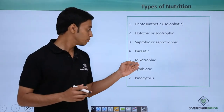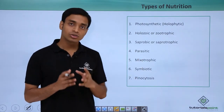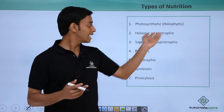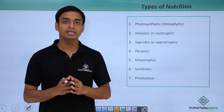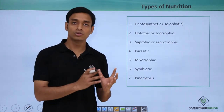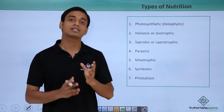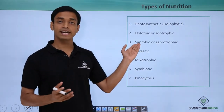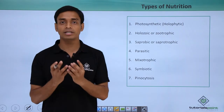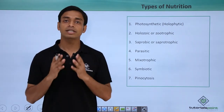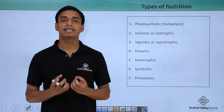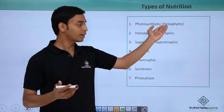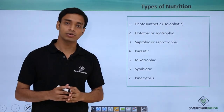The next type is known as mixotrophic nutrition. These are protists which can perform both holophytic as well as saprobic types of nutrition. That means they can prepare their own food with the help of carbon dioxide, sunlight, and the pigment chlorophyll. They can also secrete enzymes when food material is present in the environment and then take in the digested food. So mixotrophic means they can be holophytic as well as saprobic.